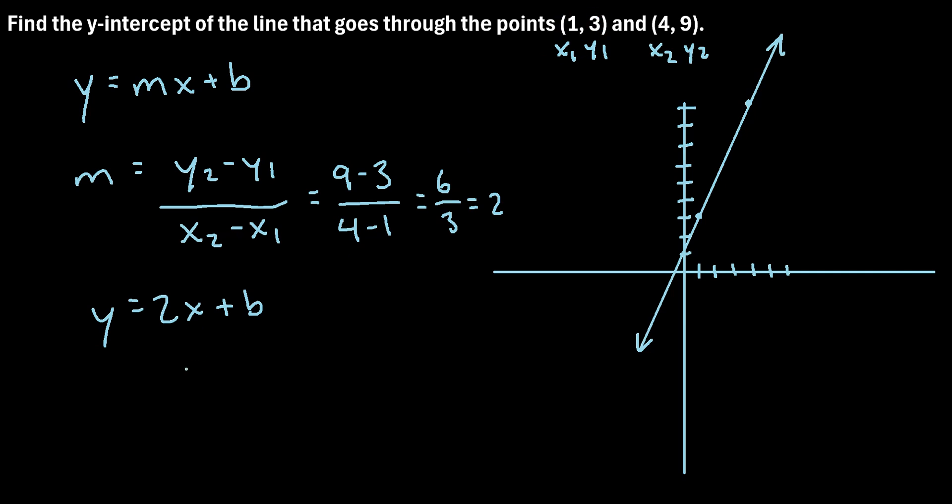So we'll plug in a 3 for y equals 2 times, we'll plug in a 1 for x. So 2 times 1 plus b, and now we need to solve for b. So we get 3 equals 2 times 1 is 2, plus b. If we subtract 2 from each side, we see that 1 equals b.